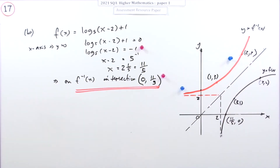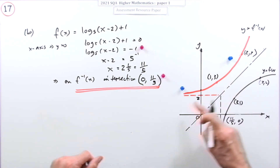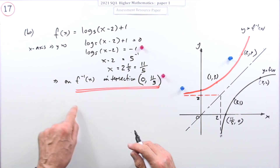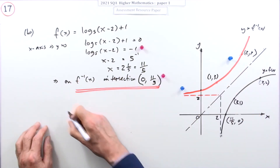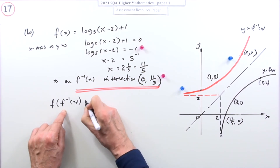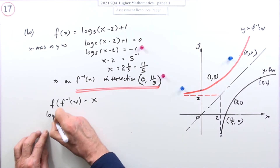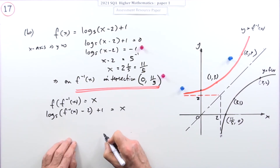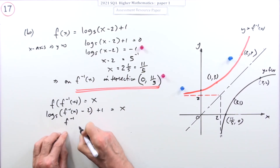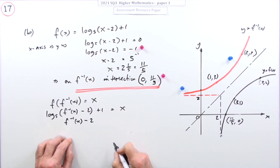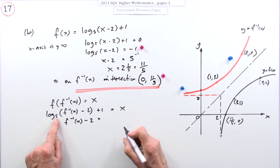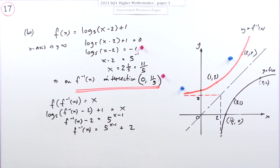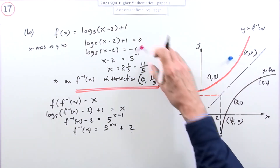The other way is to find the inverse function directly, though that's longer. Using f composed with f inverse equals x: log base five of (f inverse minus two) plus one equals x. Taking the one across gives x minus one, then applying the inverse of log base five gives five to the power (x minus one). So the inverse function is f inverse of x equals five to the (x minus one) plus two - that gets you a mark.